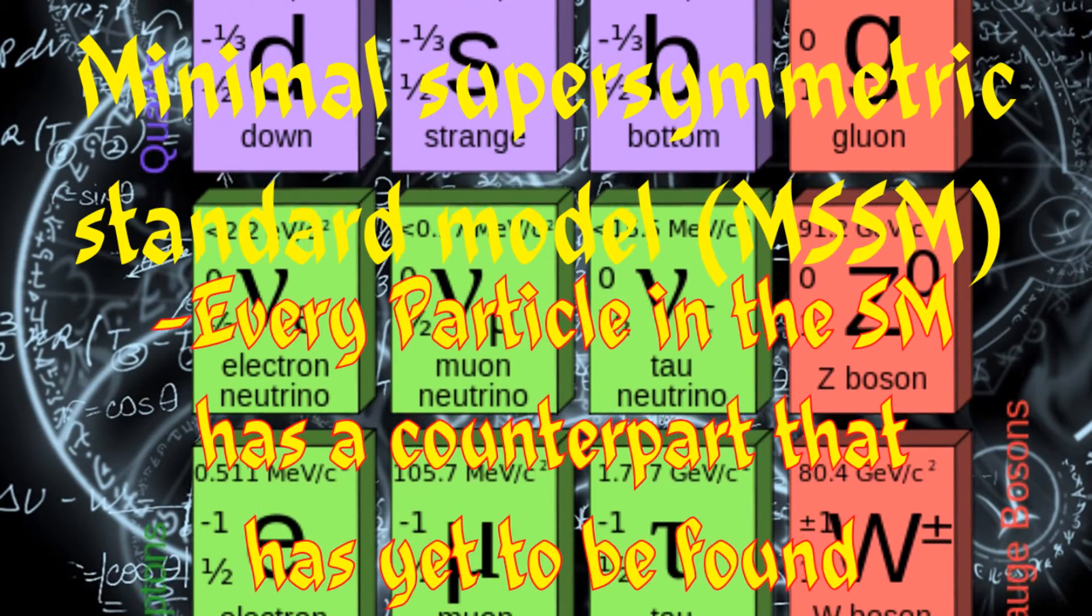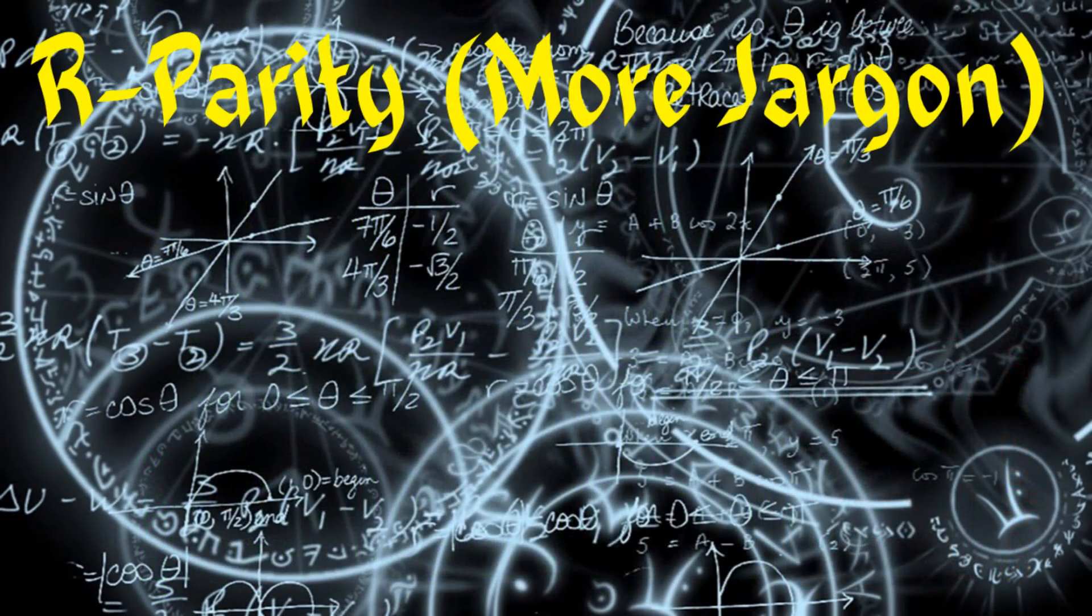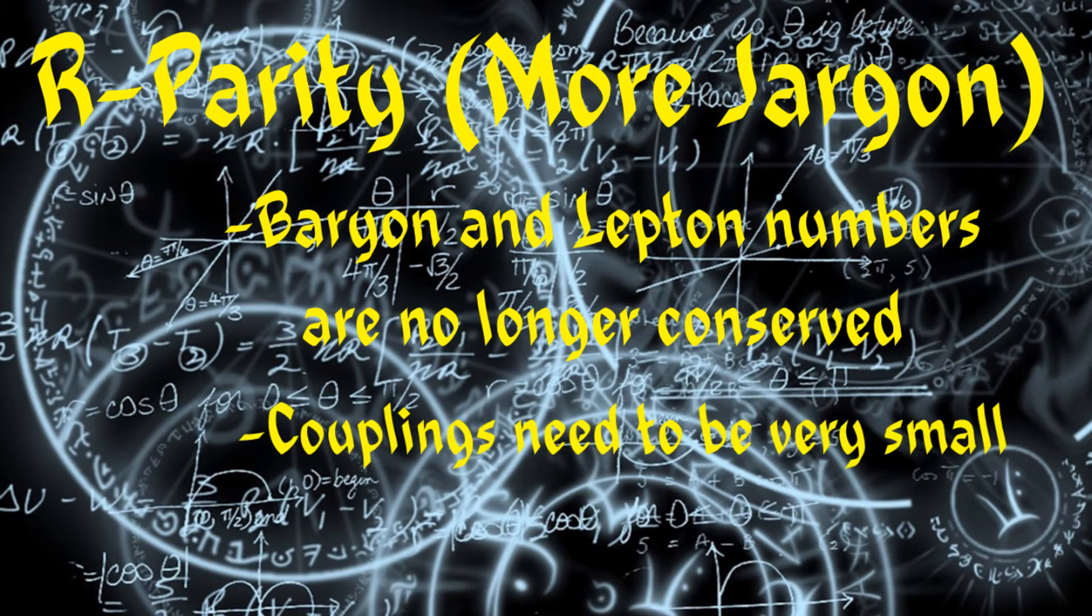Therefore, every particle in the standard model has a counterpart that has yet to be found. R-parity is a concept in particle physics. In the MSSM, baryon number and lepton number are no longer conserved by all the renormalizable couplings in the theory. Since baryon number and lepton number conservation has been tested very precisely, these couplings need to be very small in order not to conflict with the experimental data.